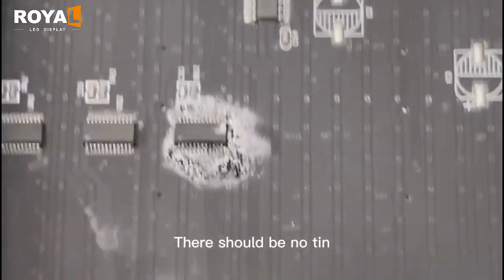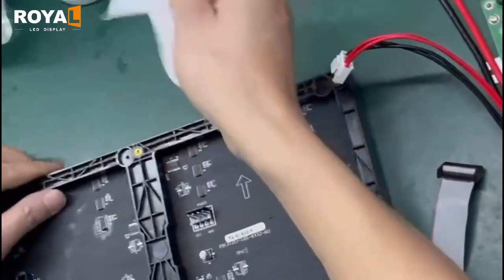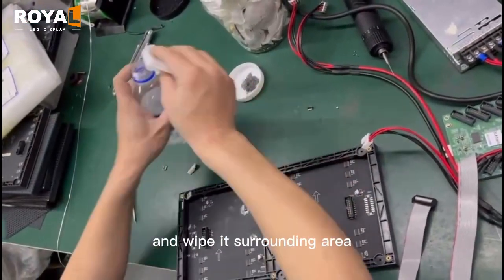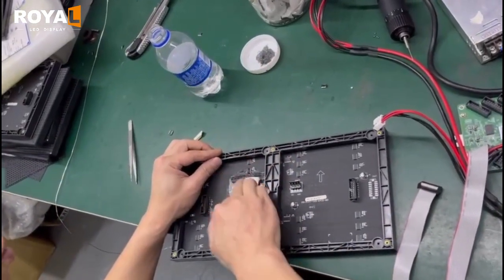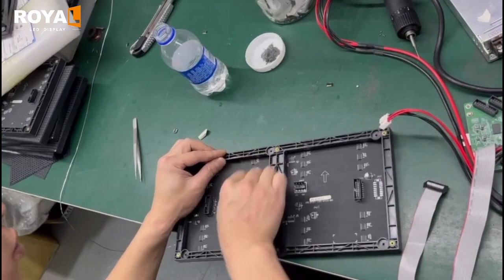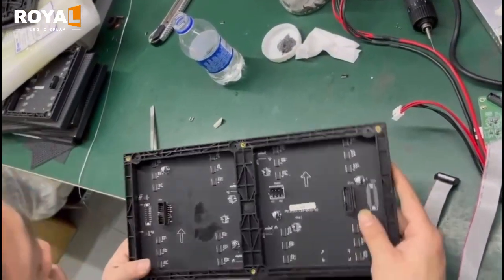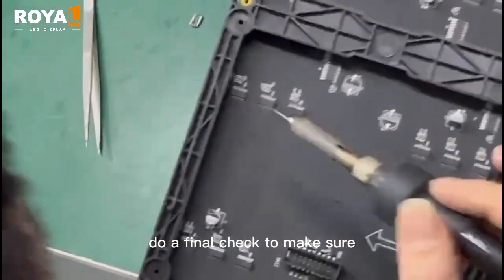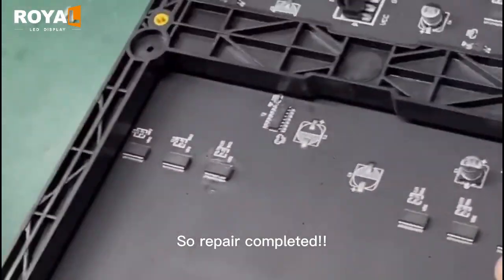There should be no tin left on both sides of the lamp pin. Finally, use a little alcohol on the cloth and wipe its surrounding area. Wait for the alcohol to evaporate and do a final check to make sure there is no tin left around. So, repair completed.